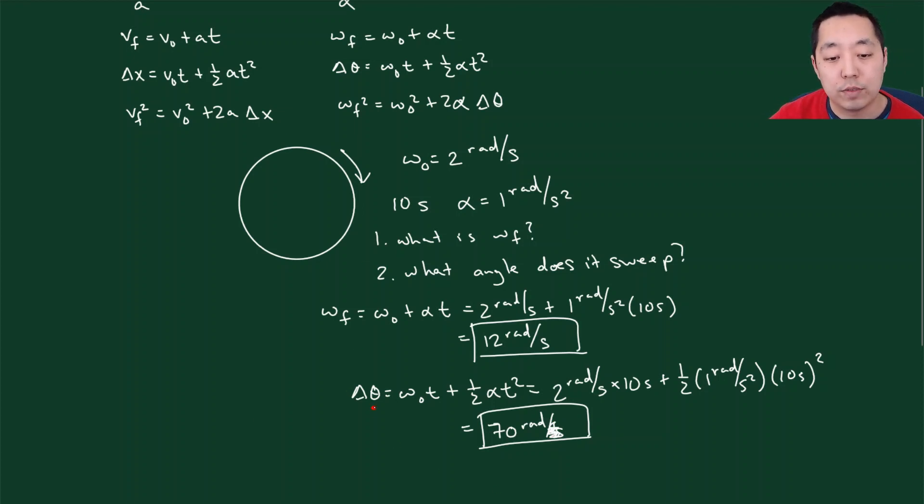Okay, because the units of this is in radians. Because there's a radians per second, that becomes radians. Yeah. Okay, so that's a basic way that we're going to use the kinematic equations. It's very, very similar to how we do it in linear motion.